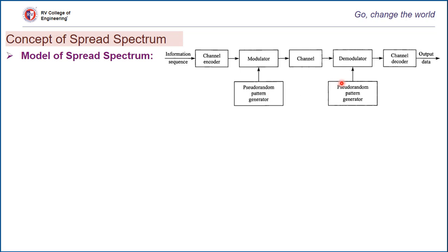Synchronization of the PN sequence generator at the receiver with the PN sequence contained in the incoming received signal is required in order to demodulate the received signal. Synchronization is one of the primary characteristics in order to demodulate the received signal.